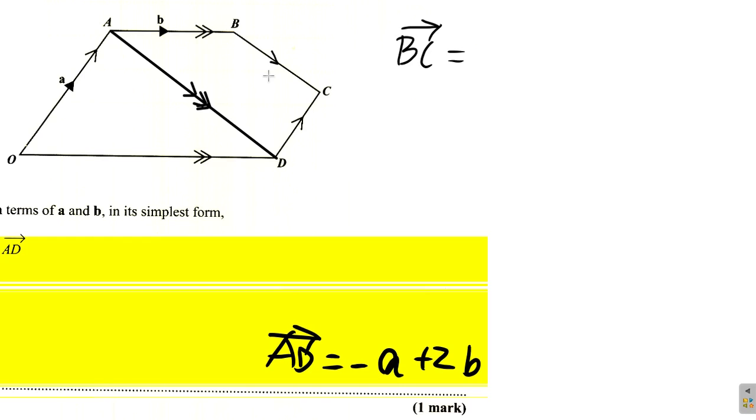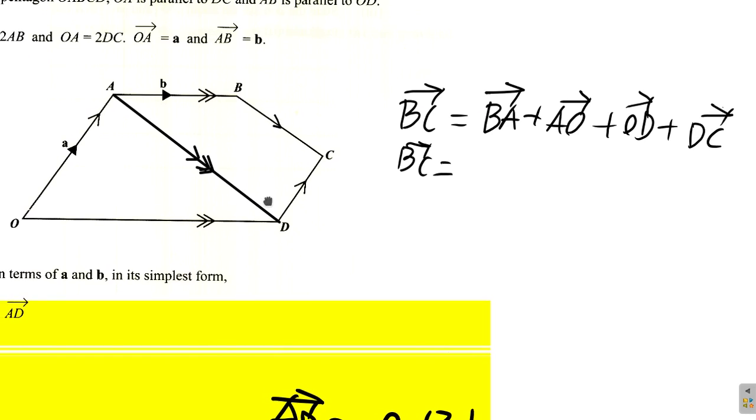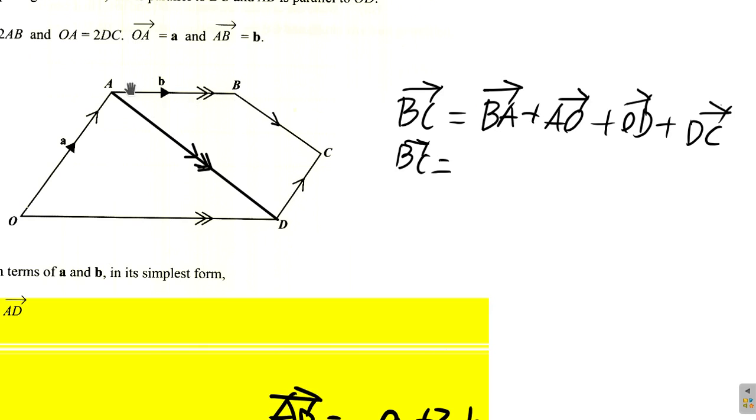So BC, you could go from B to C, you would end up in the same place if you go from B to A, A to O, O to D, then D to C. So BC equals BA plus AO plus OD plus DC. So BC equals... What is BA? BA is negative b. AB is positive b, so BA would be negative b, the inverse vector. So it's negative b. So we have that one taken care of.